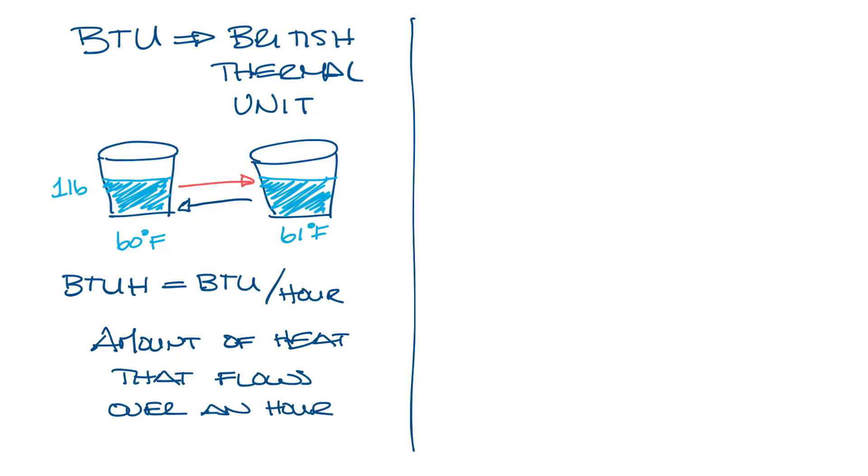So what is a ton? Well, one pound of water changing temperature by one degree is a pretty small amount of energy when compared to how much you need to cool an office or even your home. So you often hear about tons of refrigeration, like a five-ton air conditioner.